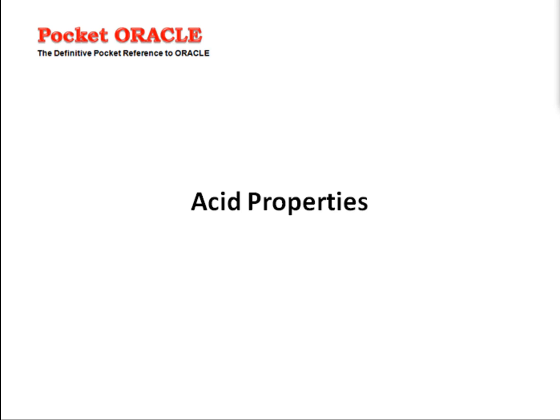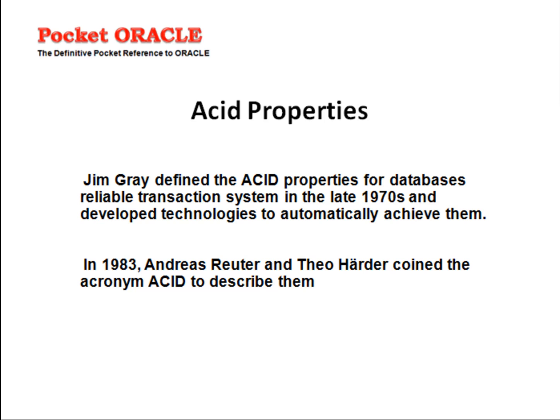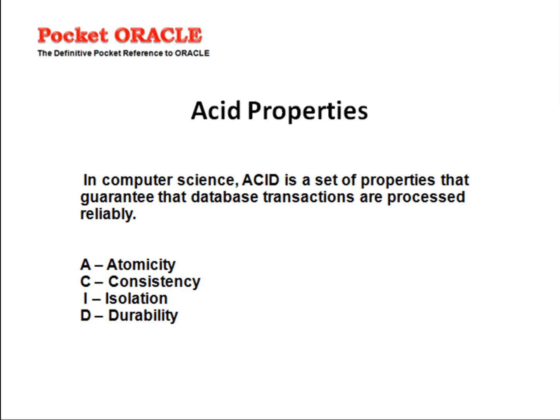This presentation is brought to you by Pocket Oracle, the definitive quick pocket reference to Oracle. In this session we will see about the ACID properties of a database. Jim Gray defined the ACID properties for databases as a reliable transaction system in the late 1970s and developed technologies to automatically achieve them. Later in 1983, Andreas Reuter and Theo Härder coined the acronym ACID to describe those properties of the database.